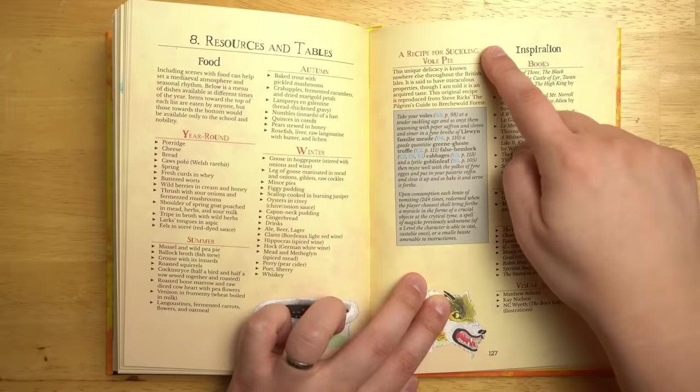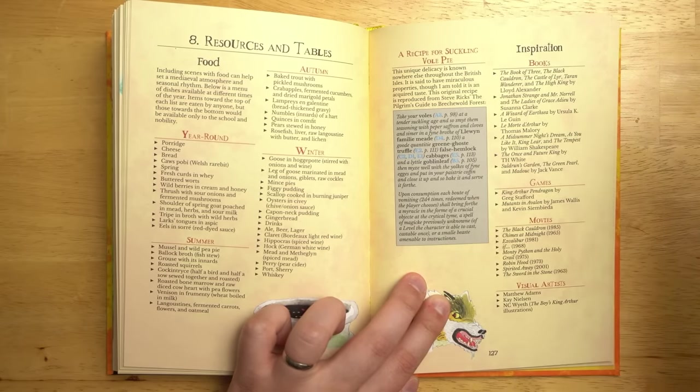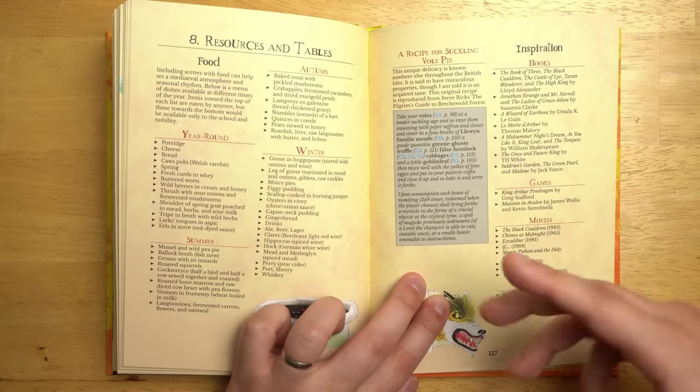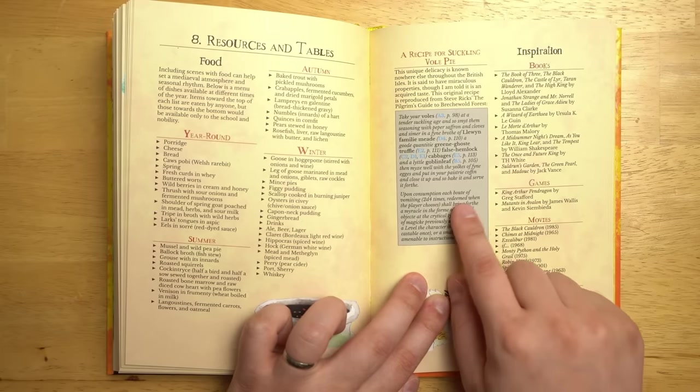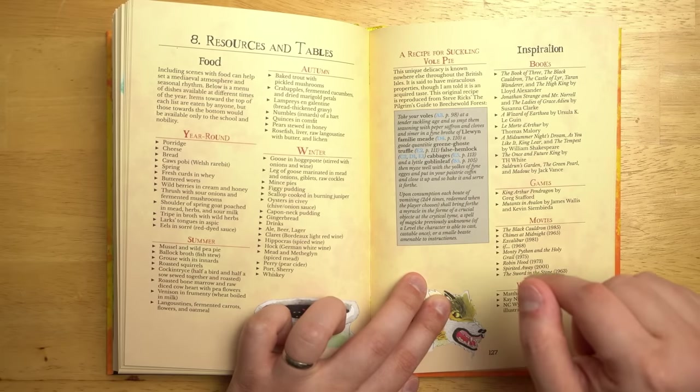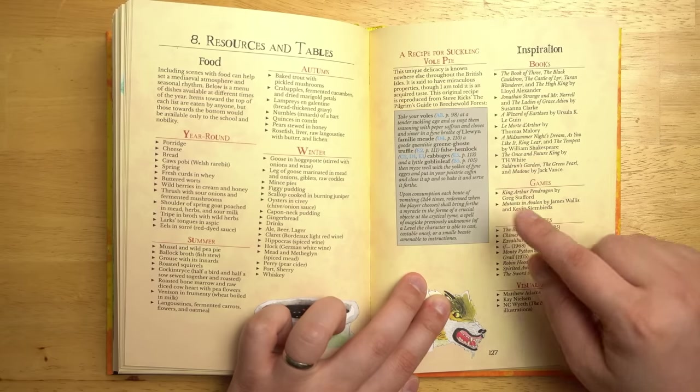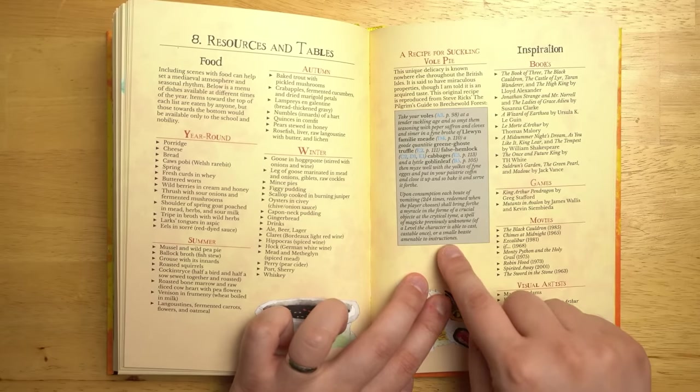This is really fun. There's a recipe for suckling vole pie, which is something that comes up a bunch during the adventure. You keep hearing about this pie. And if you find all of the different ingredients, which are found in different parts of the dungeon or in the hex crawl, then you can finally bake it yourself. And upon consumption, each bout of vomiting 2d4 times, redeemed when the player chooses, shall bring forth a miracle in the form of a crucial object at the critical time. It might even give you a small beast amenable to instructions.